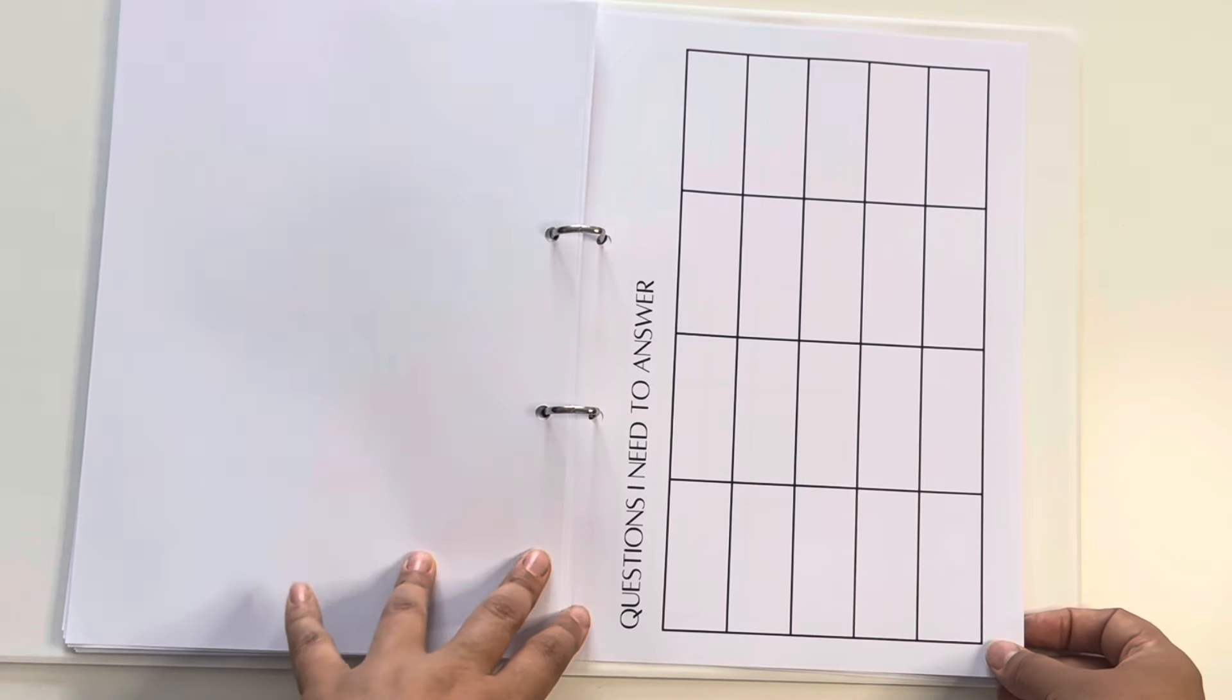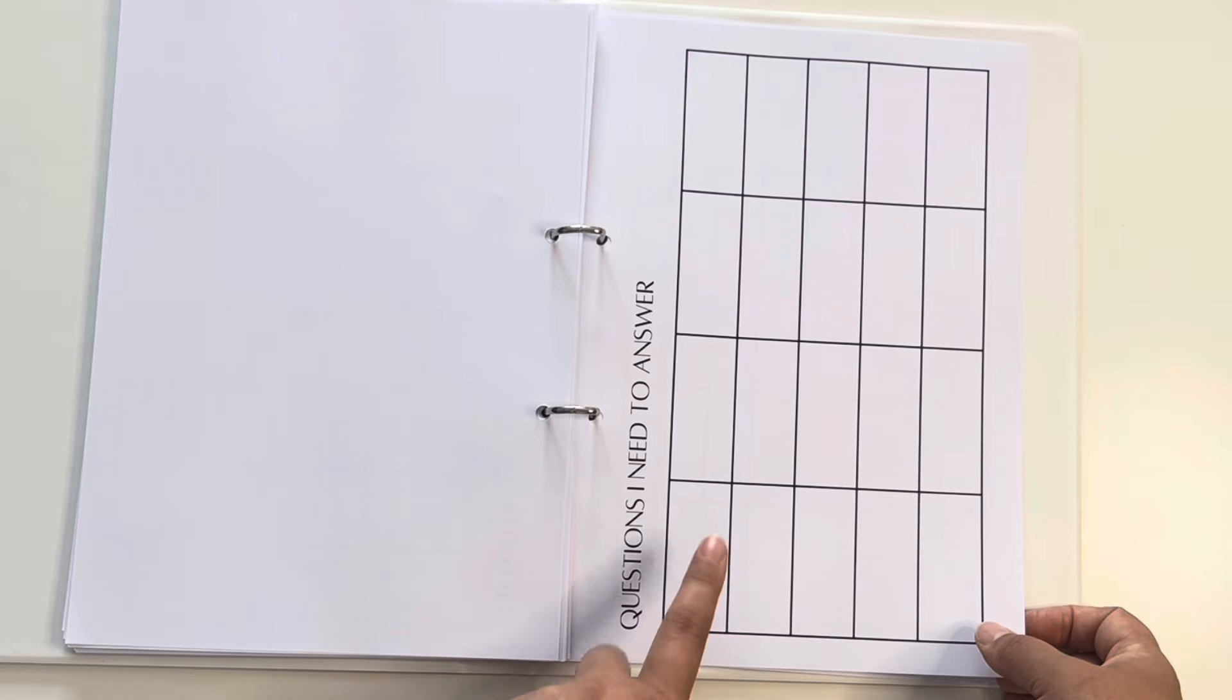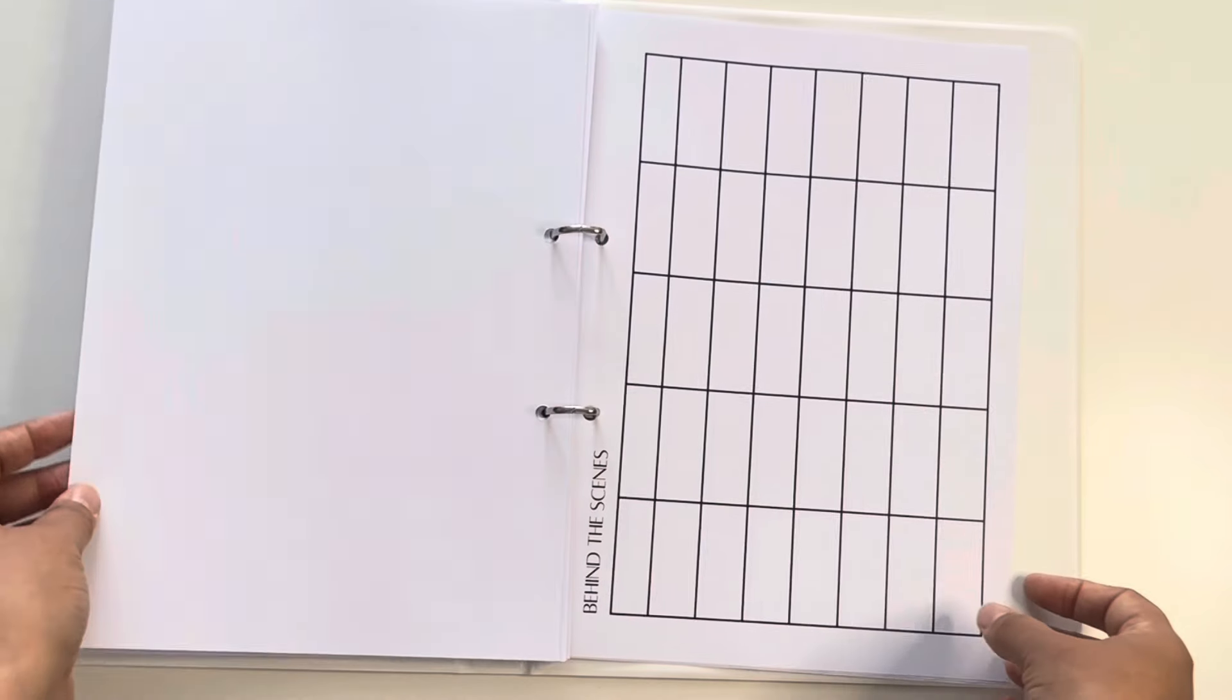And then questions I need to answer. If I have anything that pops up that doesn't have an answer in the book, they are written here. And this is, I suppose, more for revision. So this is something I can refer to for revision. Specifically, I've asked this question. I haven't answered it. I need to put the answer in the book somewhere. That will help me with dealing with that.